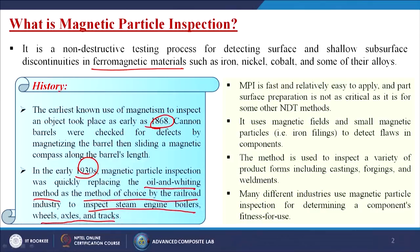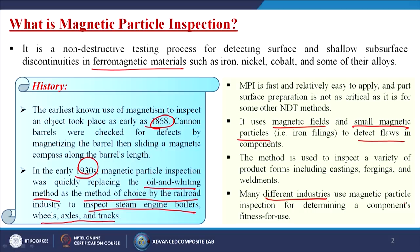In short, we generally call it MPI — magnetic particle inspection. It is very fast and relatively easy to apply, and part surface preparation is not as critical as for some other non-destructive testing methods. It uses magnetic fields and small magnetic particles to detect flaws in components. The method is used to inspect a variety of products including castings, forgings, weldments and other types of materials. Many different industries use MPI for determining a component's fitness for use.